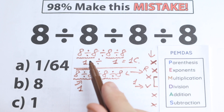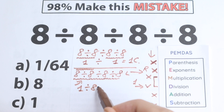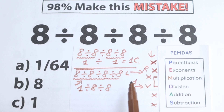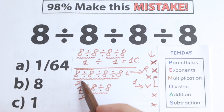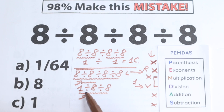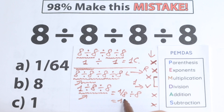Now we rewrite the expression and continue left to right. This is absolutely the same first step as before. But now the next first sign from left to right is 1 divided by 8, which equals 1/8. Then dividing that result by 8 gives us 1/8 ÷ 8, which equals 1/64.